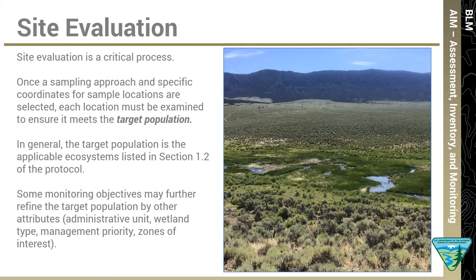Each potential sample location should be evaluated through a two-step process of office evaluation followed by field verification. The site evaluation process is particularly important for projects with a random sample design that will be used to estimate the range of conditions across a population of interest. There is more flexibility in evaluating targeted sites which are selected for management objectives.